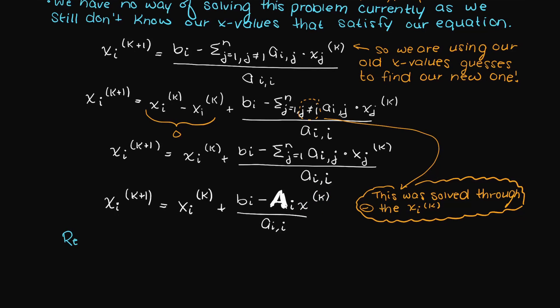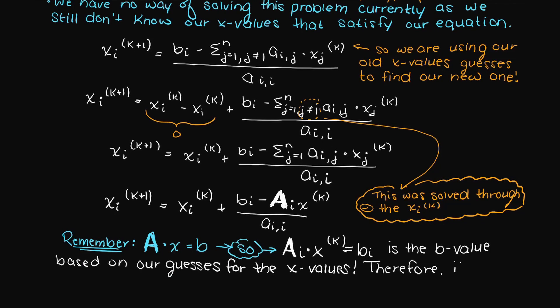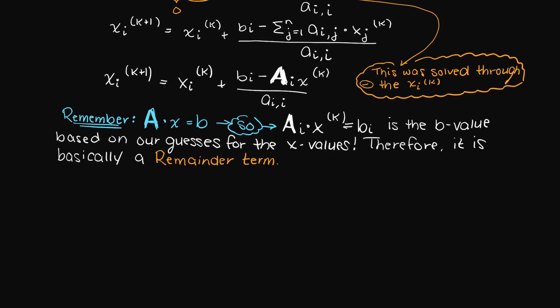But remember, our A matrix times x is b, or our constant vector. However, this is not exact, as we were guessing values of x that would make this statement here true. Therefore, we can simply call this term here our remainder term.